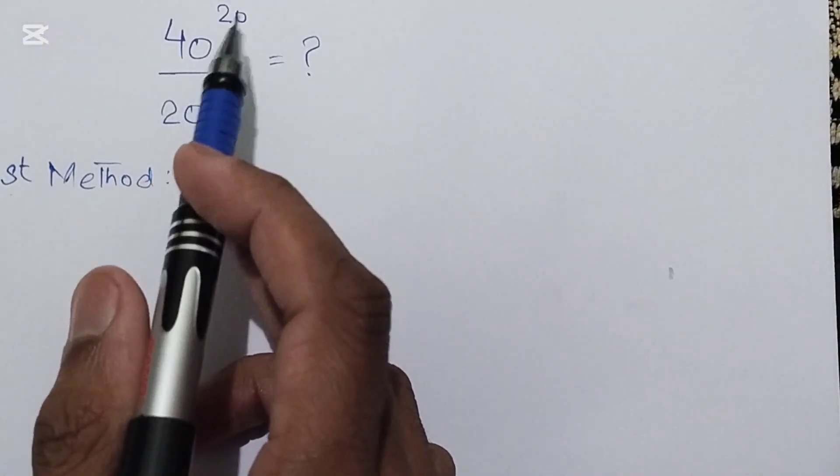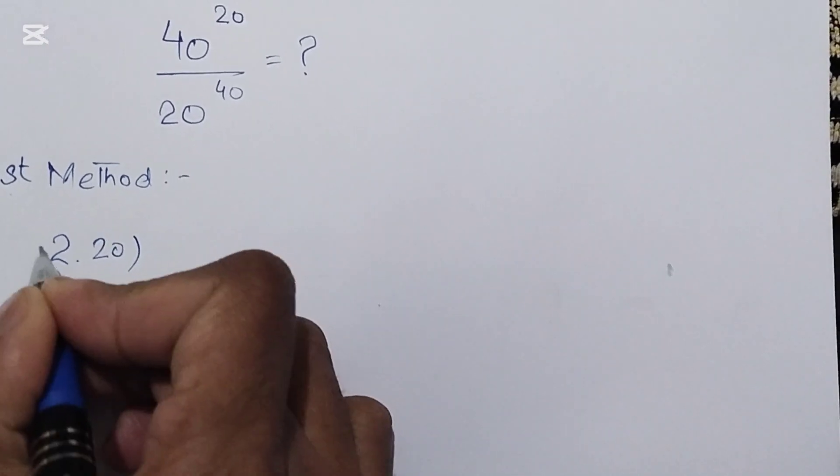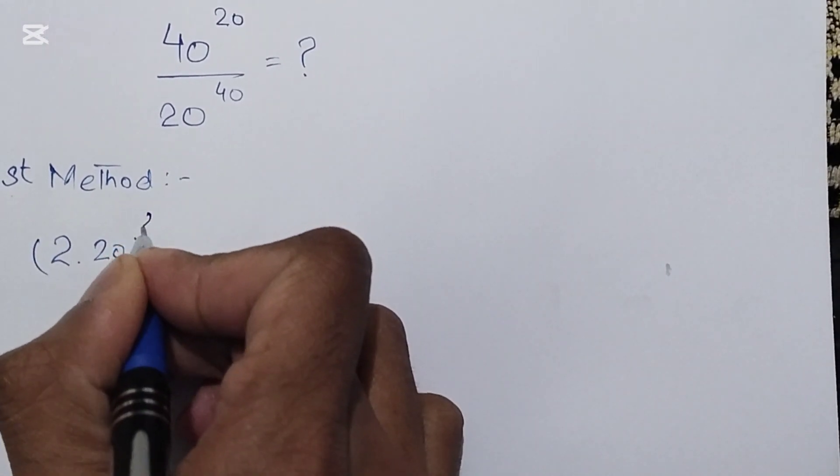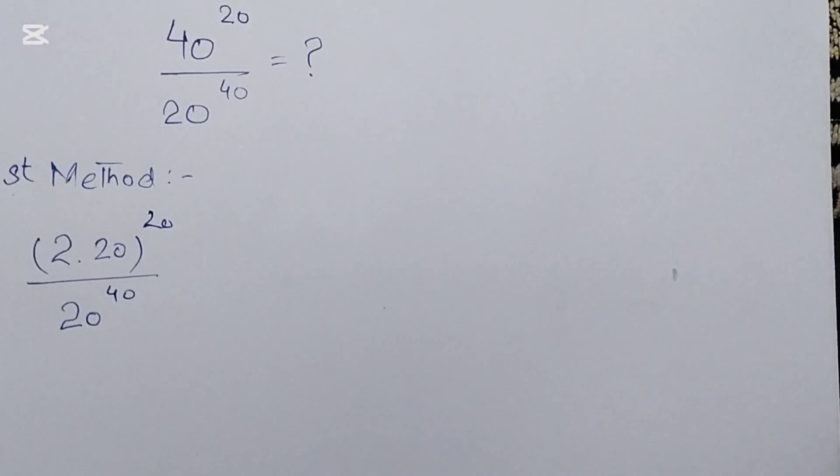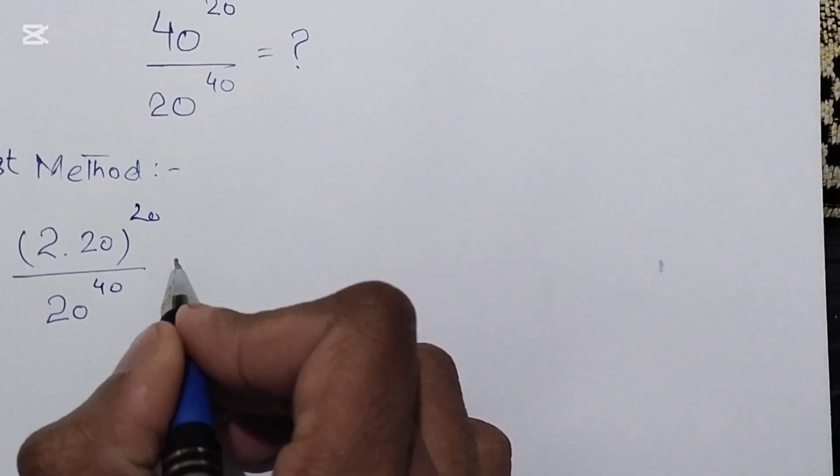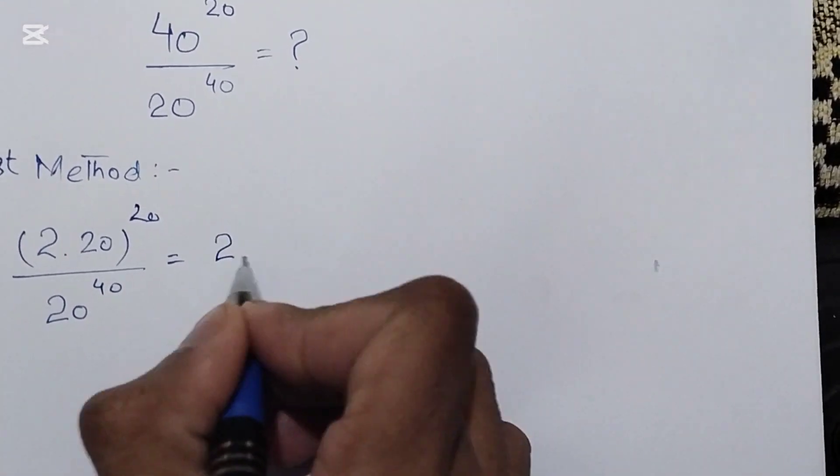We can write 40 as 2 into 20, whole power 20 over 20 power 40. Now we can write the denominator as (20 squared)^20.